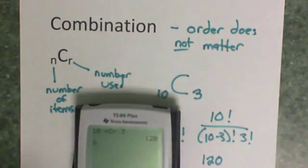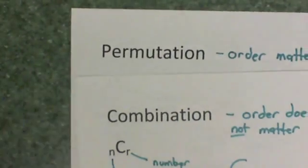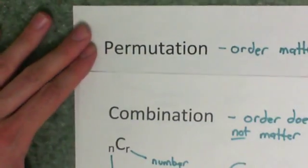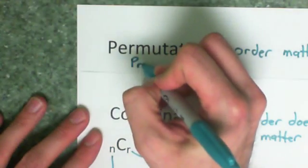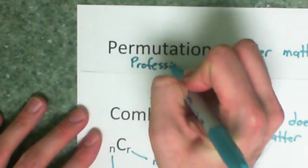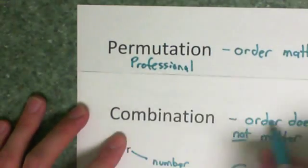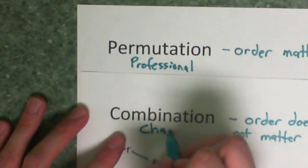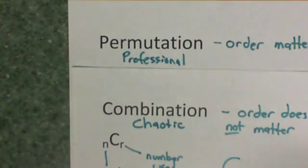So now the question is how do we determine if we are using the permutations or the combinations. And the way that I've come up to remind myself of this is that when order matters, that's more of a professional. You're making sure everything is neat and orderly in an order. And when order doesn't matter, that's a bit more chaotic. That once you get your group you can just rearrange them all around and you can have a variety of options.